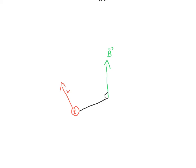I'm going to decompose the velocity of the charged particle into a component that is parallel to the magnetic field and a component that is perpendicular to the magnetic field. So this would be v parallel and this would be v perpendicular.